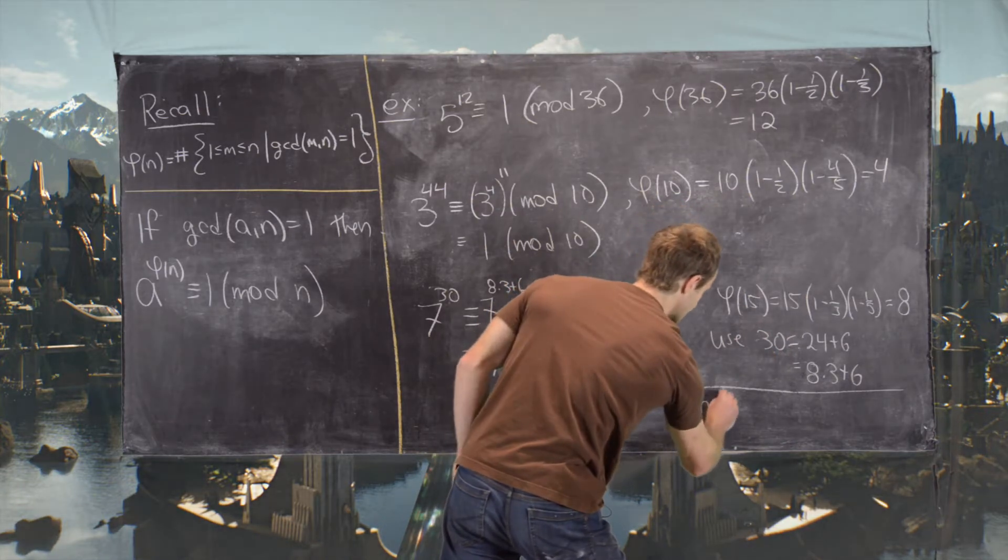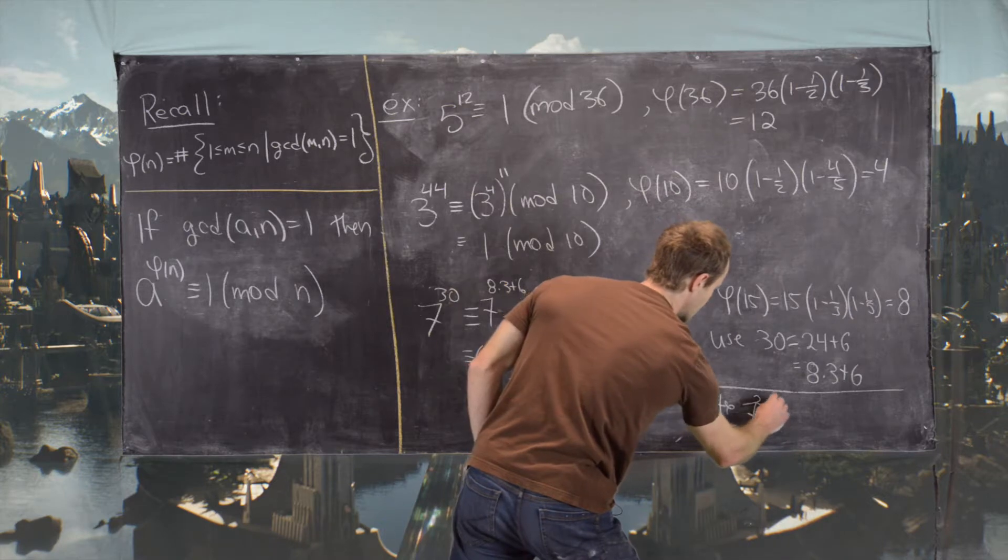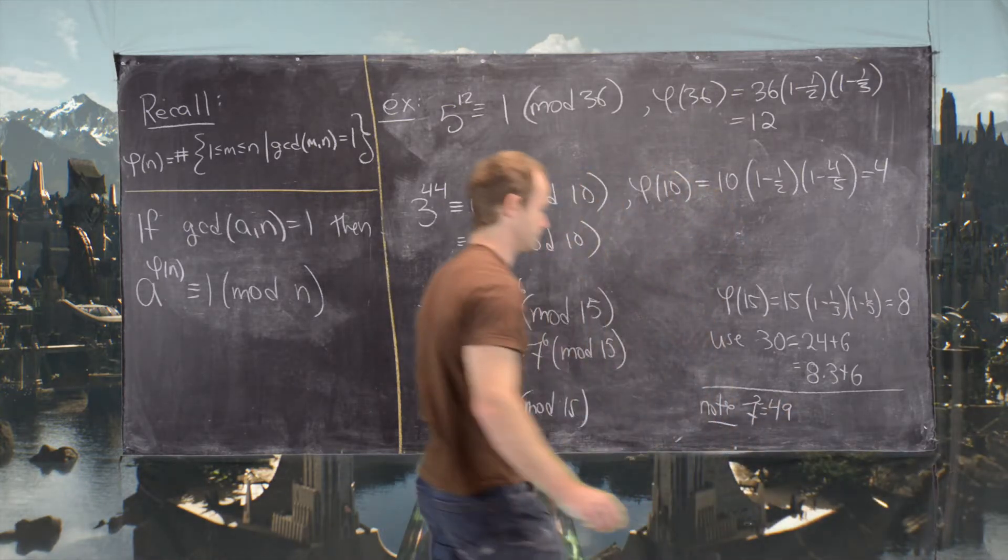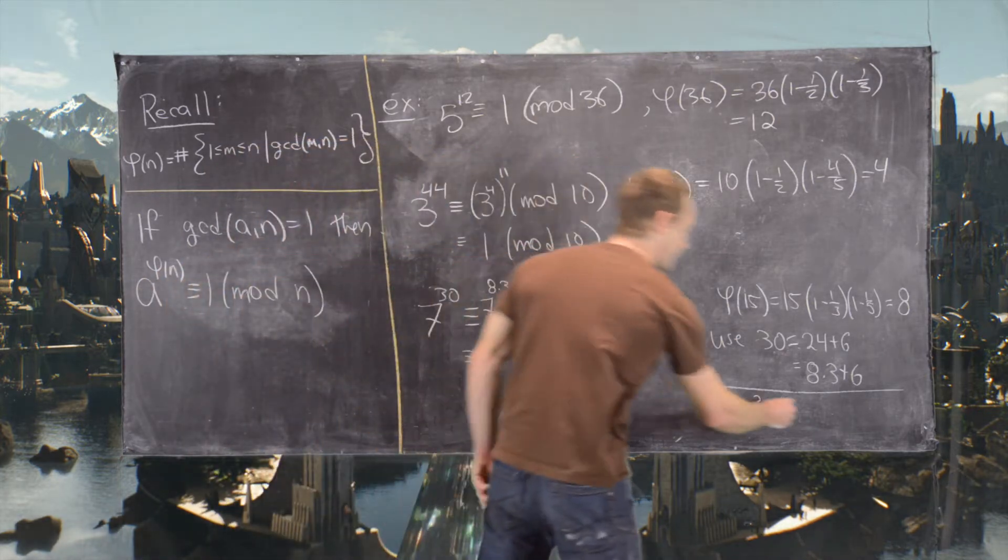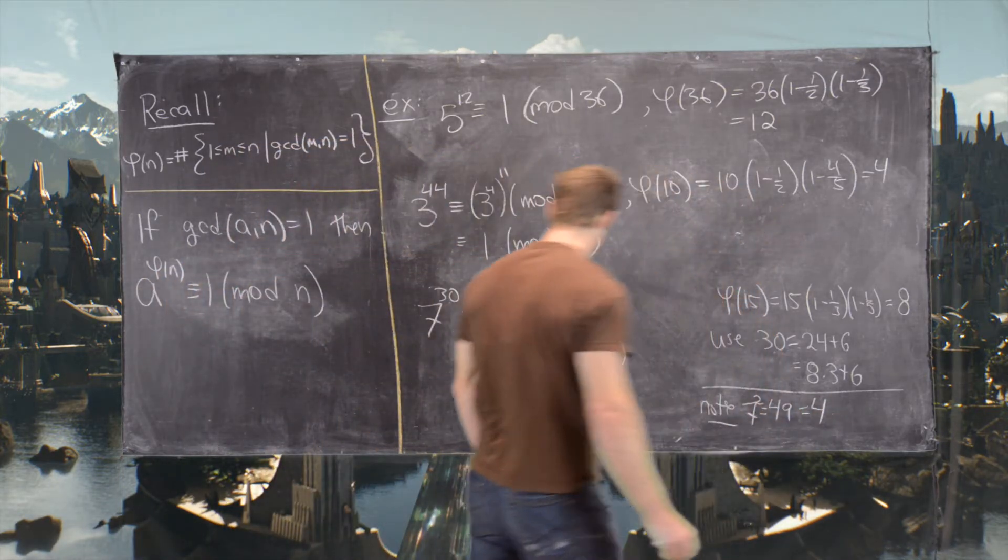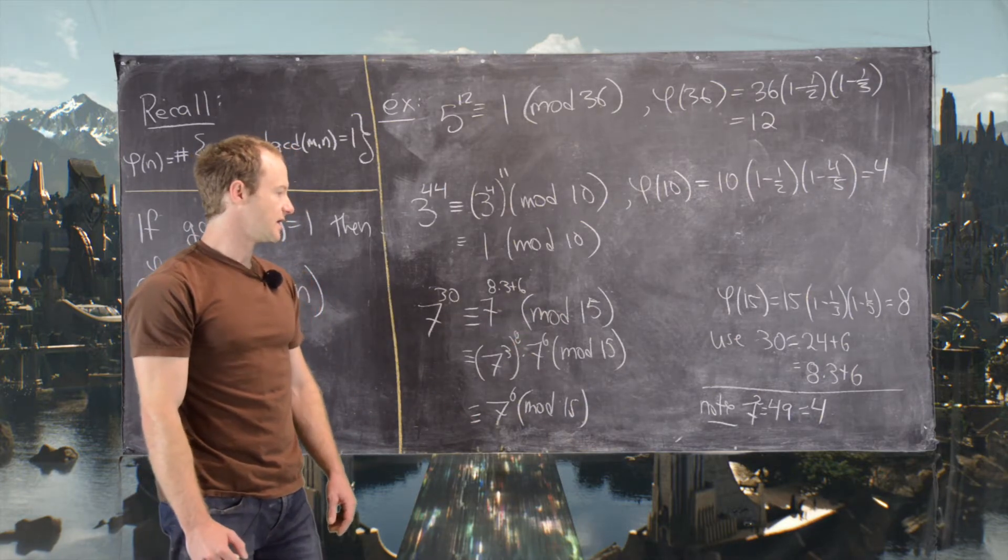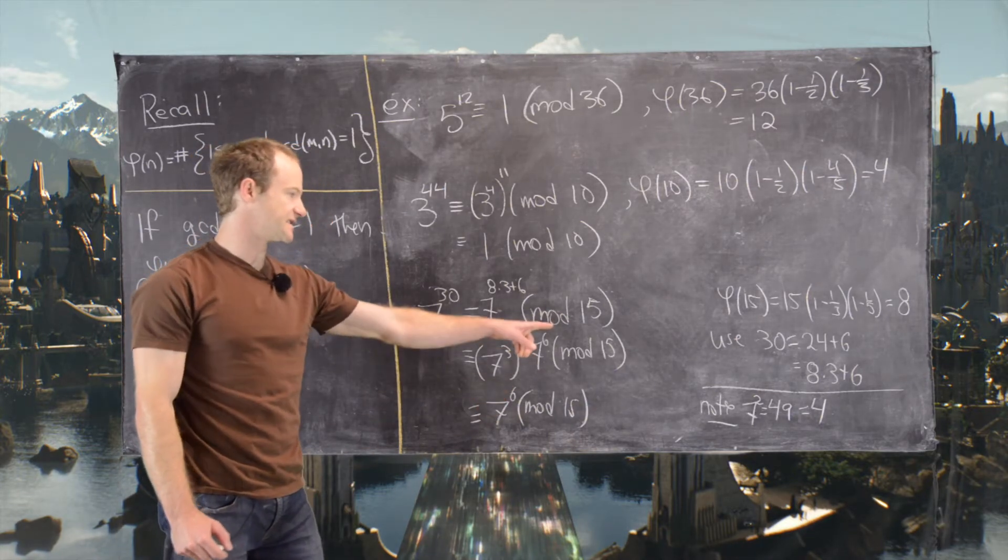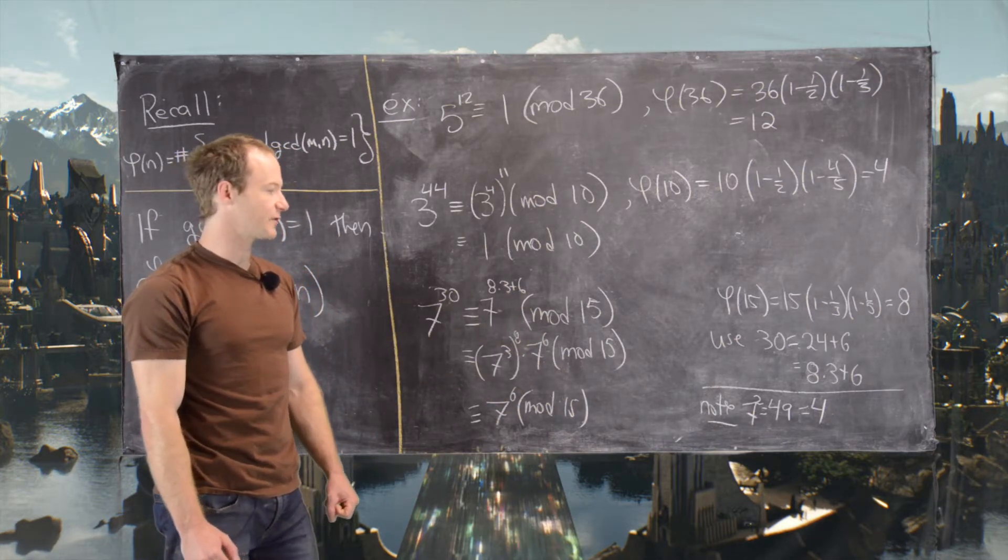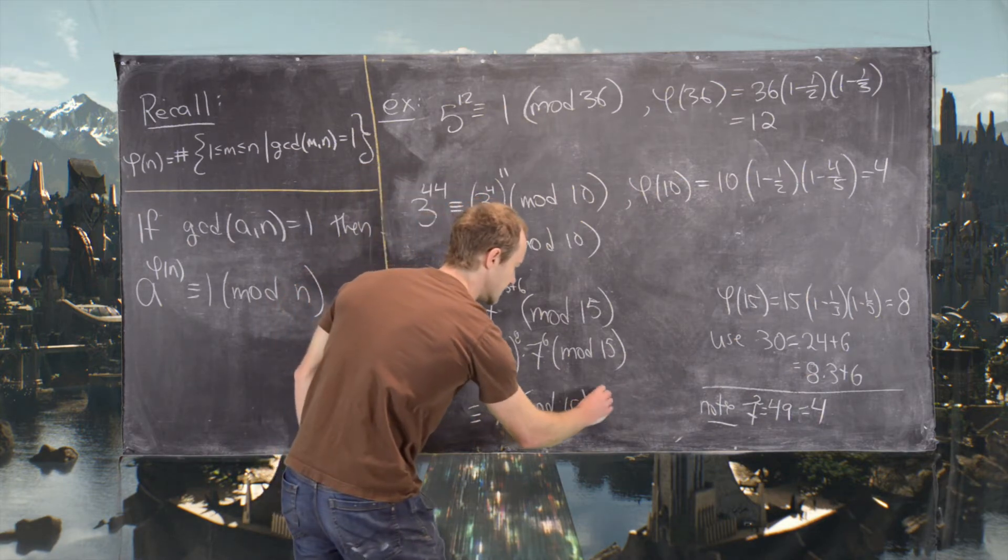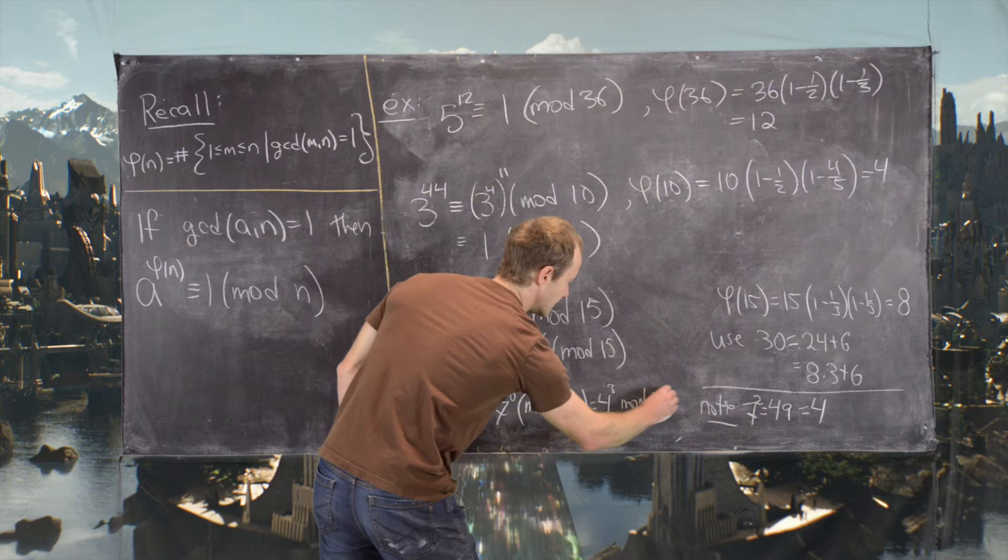We can notice that 7 squared is equal to 49, and 49 is equal to 4 mod 15. Now if we do 7 to the 6th is the same thing as 7 squared cubed. So what we're left with is 4 cubed. So that means this is equal to 4 cubed mod 15.